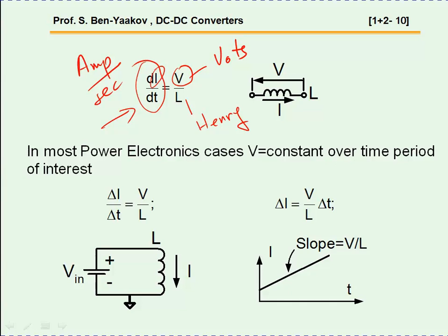In most power electronic circuits, a constant voltage is imposed on the inductor for a short period of time, and then another voltage is imposed on it. If a voltage is imposed on the inductor, the current will rise in a linear fashion because V is constant, L is constant, and V over L is the rate of rise. Obviously, if this voltage persists, the current will go up and, if not removed, will reach dangerous values and the inductor will burn out.